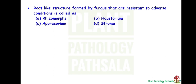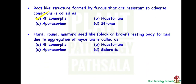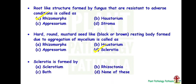Root-like structure formed by fungus that is resistant to adverse conditions is called as? Answer is Rhizomorph, that is A. Then, hard round mustard-seed-like structure, black or brown resting body formed due to aggregation of mycelium, is called as? Answer is D — Sclerotia. Then, sclerotia are formed by? Answer is Sclerotium and Rhizoctonia, that is C — both.